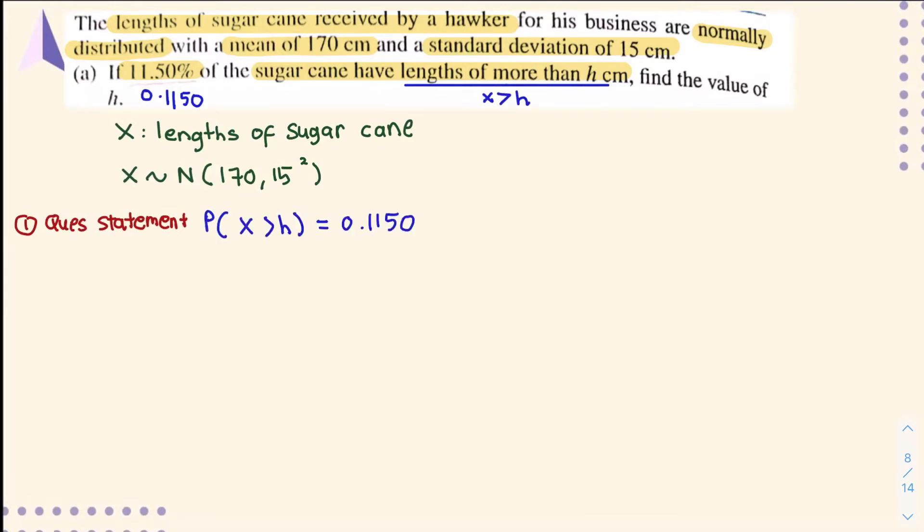This means 11.5% is your probability of 0.1150, and length more than h cm is x greater than h. Write down the notation: probability of x greater than h equals 0.1150.